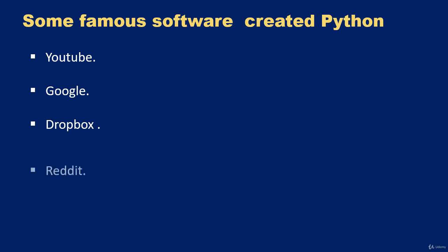Famous software built with Python includes YouTube, Google, Dropbox (a cloud file-saving service), Reddit (one of the biggest open communities on the web, useful for finding information on any topic), Spotify (an ad-free music streaming service), and Instagram. These are just a few — there are many others built using Python.